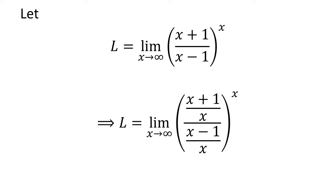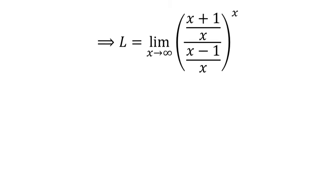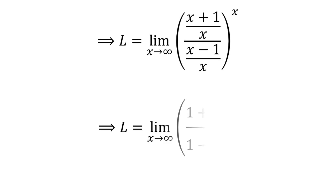Multiplying the numerator and the denominator of a fraction by a common factor does not change the value of the fraction. So let us multiply the numerator and the denominator by 1 upon x. Further simplification gives us L is equal to the limit of 1 plus 1 upon x, upon 1 minus 1 upon x, raised to the power of x as x approaches infinity.